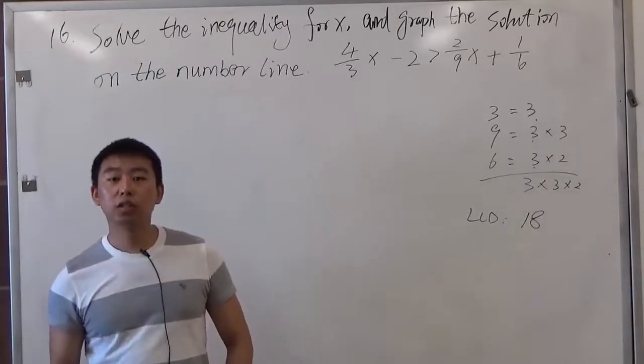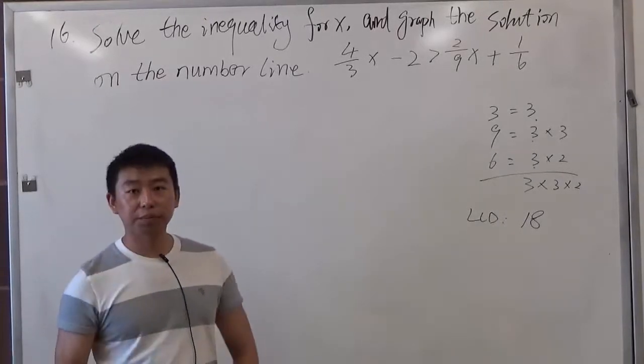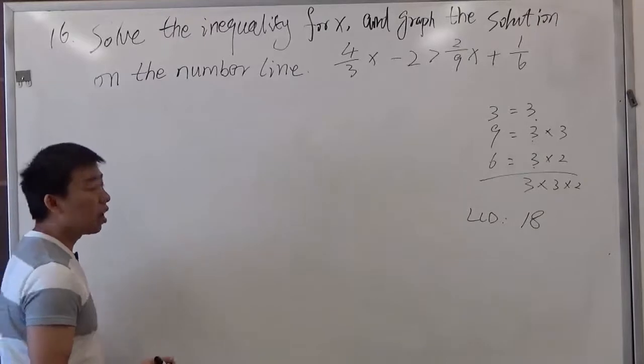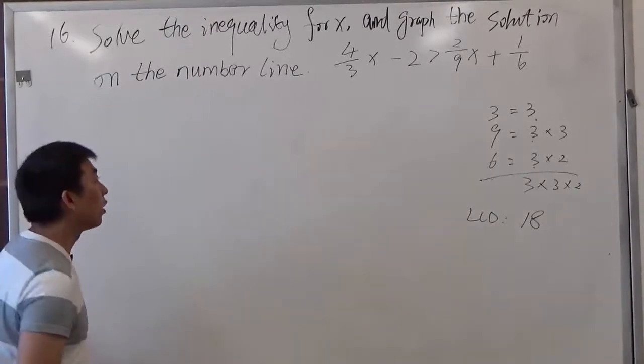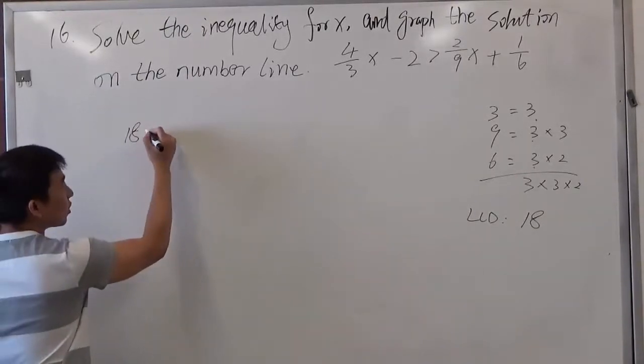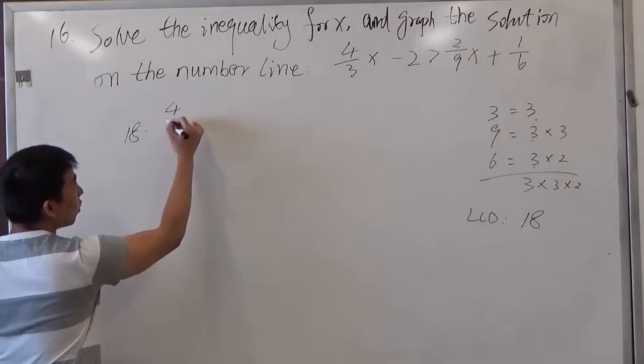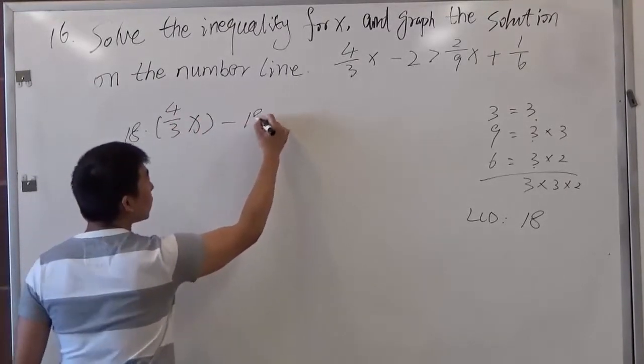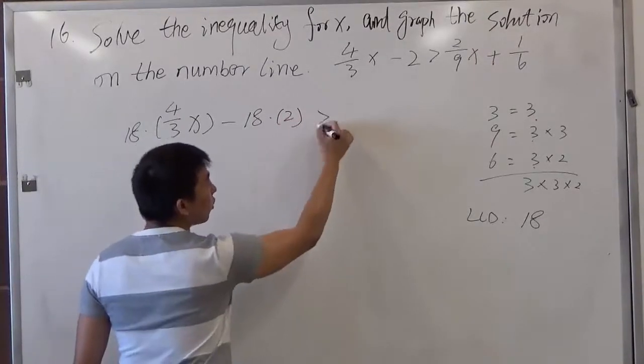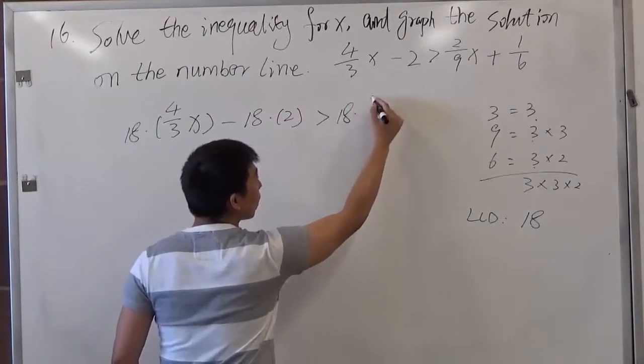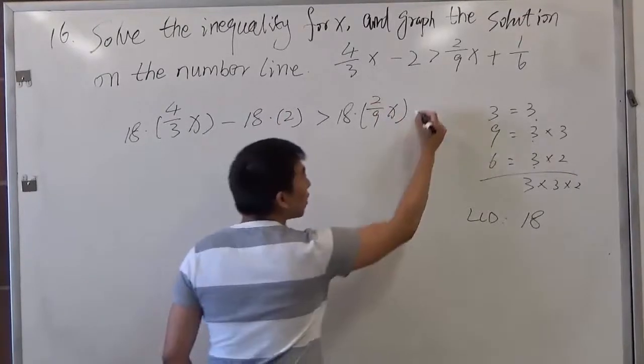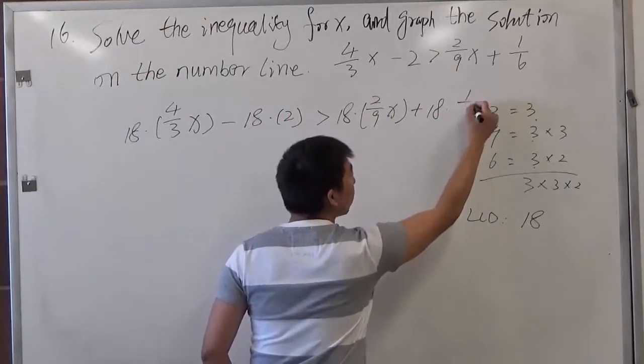So after we found the LCD, what we need to do is multiply the LCD for both sides of the inequality. Actually, all the terms of the inequality. So we have 18 times 4 over 3x, minus 18 times 2. Then it's greater than 18 times 2 over 9x, plus 18 times 1 over 6.